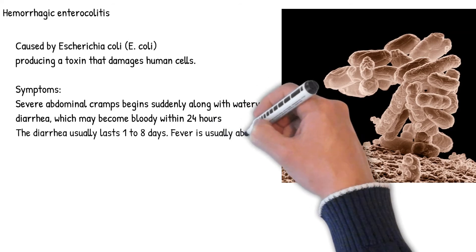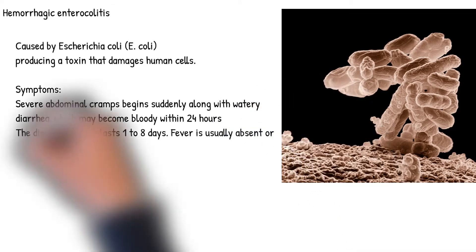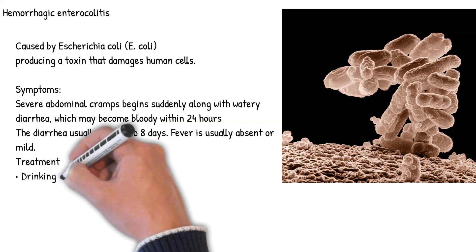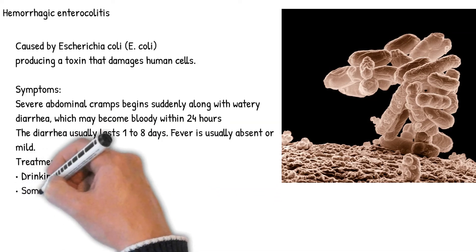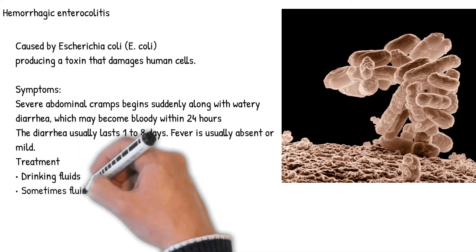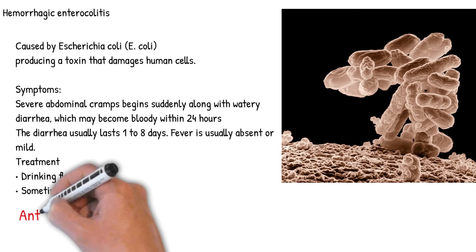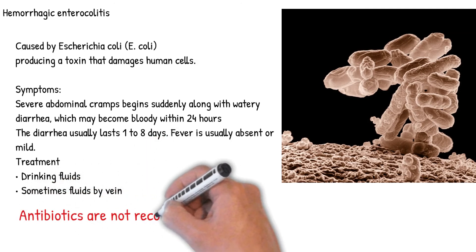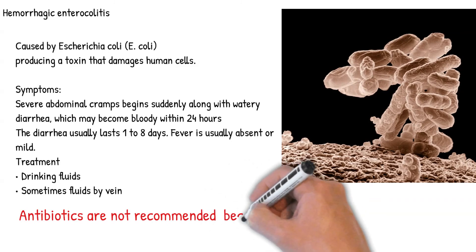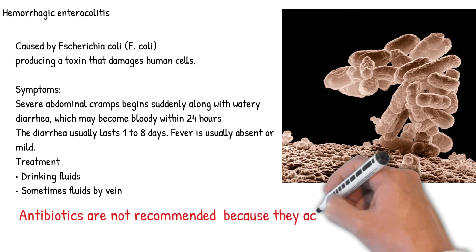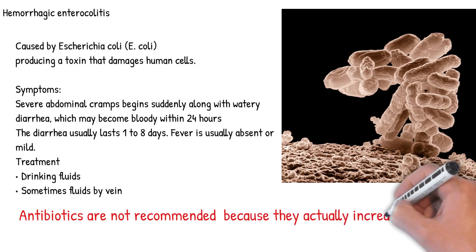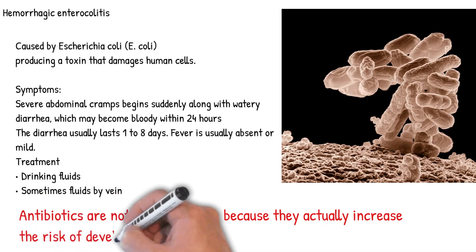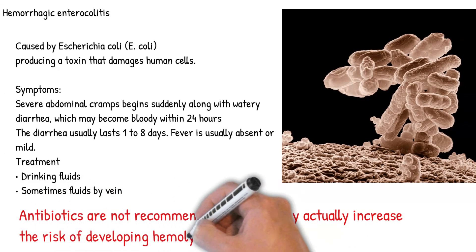About 5-10% of people with hemorrhagic colitis develop a severe complication called hemolytic uremic syndrome. Diagnosis: hemorrhagic colitis is suspected when a person has bloody diarrhea; stool specimens are tested for strains of E. coli or the toxins they produce. Treatment involves drinking fluids, and sometimes fluids by vein intravenously if so much fluid is lost. Antibiotics are not recommended because they actually increase the risk of developing hemolytic uremic syndrome. The disorder eventually goes away on its own.